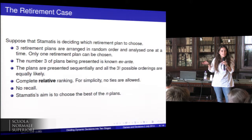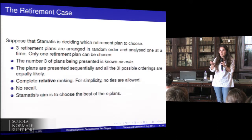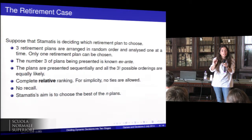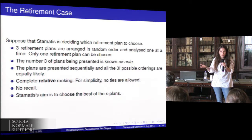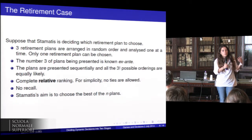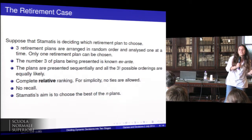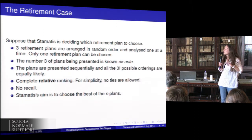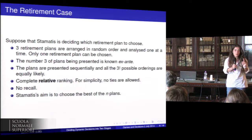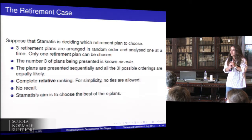Very importantly, Stamatis's aim is to choose the best retirement plan. Even though he can compare all three and order them one, two, three, he only cares about getting the best. The second best and the worst will give him utility zero. You can think of this as Stamatis trying to deceive the government — aha, I got the best! So only the best retirement plan gives him utility one; all other retirement plans give him utility zero.